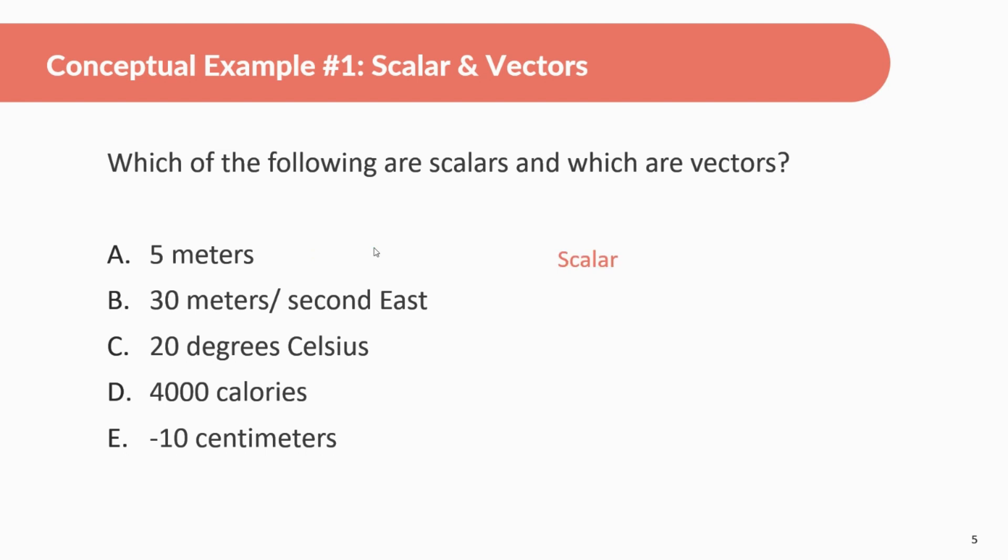30 meters per second east. You can see we have a direction here east. So when we have that, this is telling us that it is a vector. 20 degrees Celsius. So this one might be a little bit tricky. You might be thinking, thermometers kind of have that bar and could go up and down. However, I want you to think about temperature, 20 degrees Celsius or a hundred degrees Celsius or five degrees Fahrenheit, whatever. It doesn't really have a direction. It's not like five degrees Fahrenheit to the right. Temperature doesn't have a direction. Okay. So that means we're going to call it a scalar.